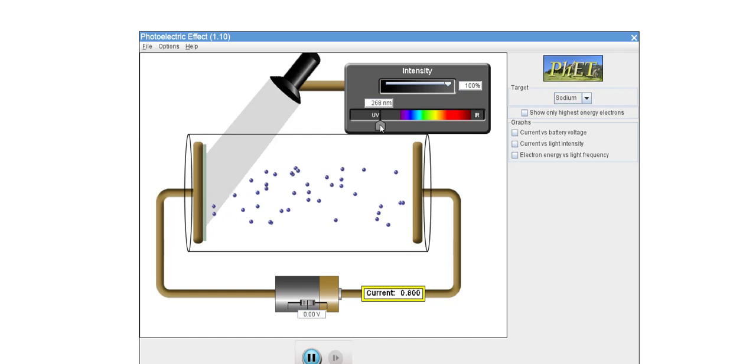If we decrease the frequency of the source to below sodium's threshold frequency of roughly 5.5 times 10 to the 14 hertz, we see that photoemission stops.